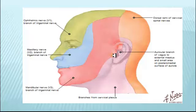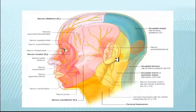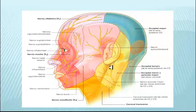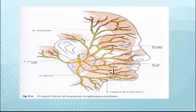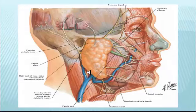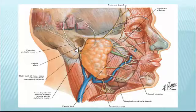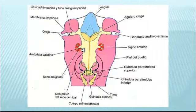Las partes derivadas del primer arco faríngeo están inervadas por la rama mandibular del nervio trigémino. Las derivadas del segundo arco faríngeo, por las ramas cutáneas del plexo cervical, principalmente el nervio occipital menor y el auricular mayor. El nervio facial del segundo arco faríngeo solo da algunas fibras para la inervación sensorial de la piel de la región mastoidea y de pequeñas áreas de ambas superficies de la oreja.